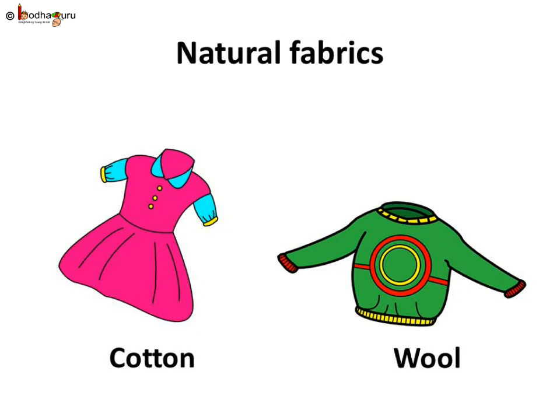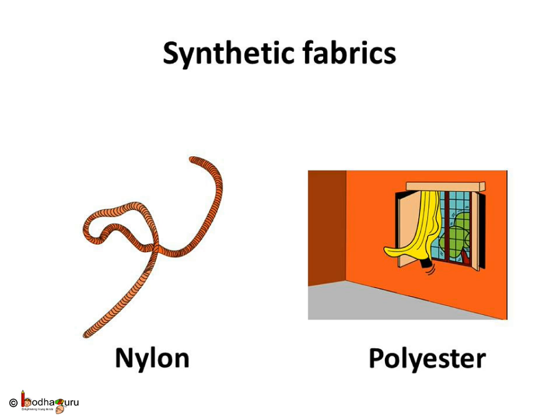So we see natural fibers like cotton and wool have been used since a long time — say thousands of years ago — to make clothes. But it was only a few hundred years back when we learnt to make synthetic fibers using chemicals, specially petroleum. Nylon and polyester are examples of synthetic fibers which we use today.